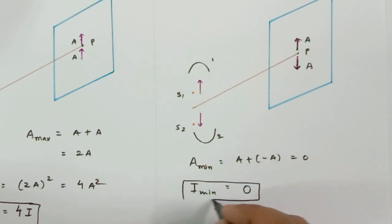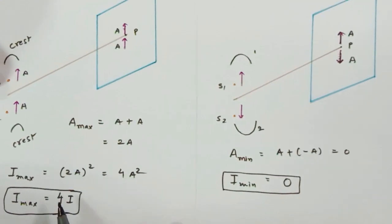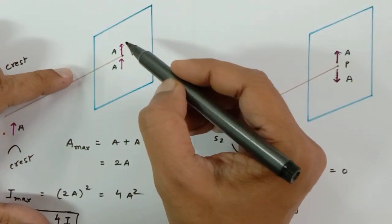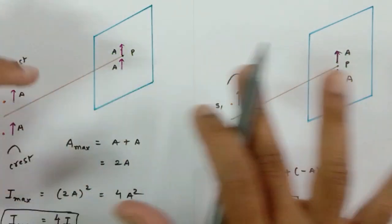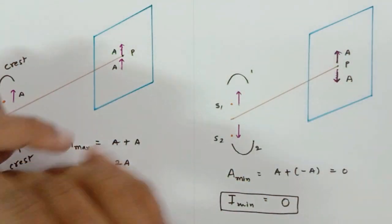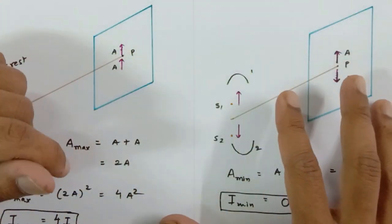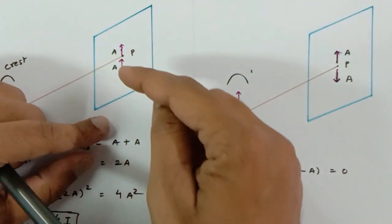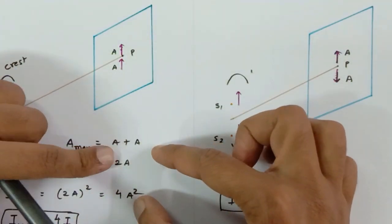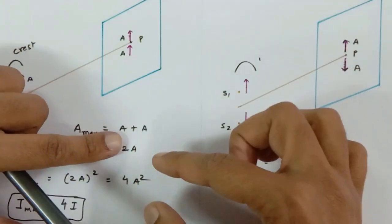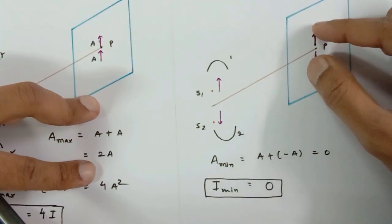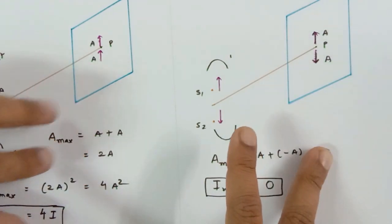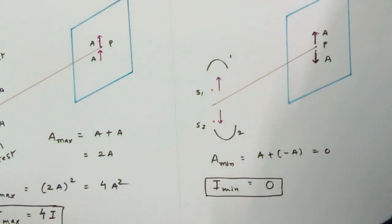So I get minimum intensity, because if the amplitude is minimum, intensity is minimum; and if amplitude is maximum, intensity is maximum. Minimum intensity is zero and maximum intensity is 4I. Now what happens if the two amplitude vectors are at an angle? I have shown you the concept with vectors: two amplitudes directly added give maximum; in opposite directions they give minimum. Squaring gives maximum and minimum intensity.